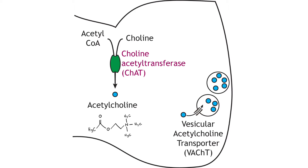Acetylcholine is best known for its role at the neuromuscular junction, the synapse between a motor neuron and the muscle fiber. In the presynaptic terminal, acetylcholine is synthesized from acetyl-CoA and choline via the enzyme choline acetyltransferase.